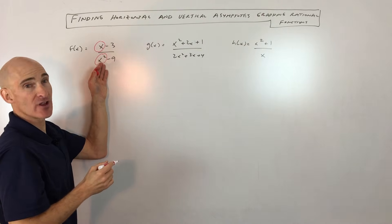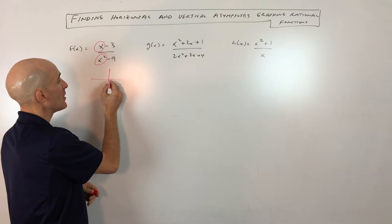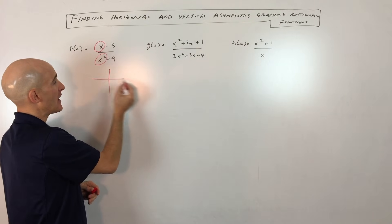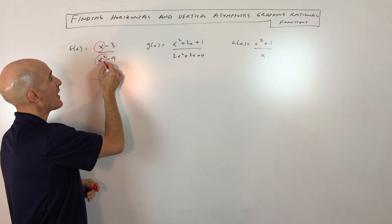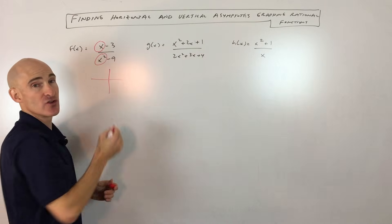What happens is as x gets larger and larger, meaning as you go to the right or the left on this graph, as x gets larger like a positive number or a larger negative number, the denominator is growing much faster than the numerator.